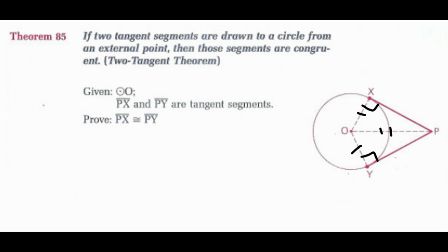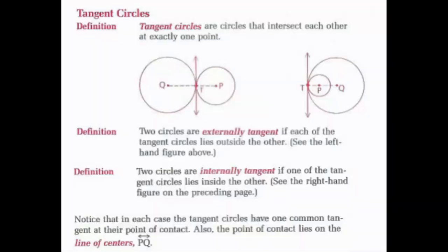Tangent circles are circles that intersect each other at exactly one point. Two circles that are externally tangent lie outside each other — both circles don't overlap and intersect at point T. Two circles that are internally tangent lie inside each other — circle P lies within circle Q and they touch at point T. In each case, the tangent circles share one common tangent at their point of contact, and the point of contact lies on the line of centers, line PQ.